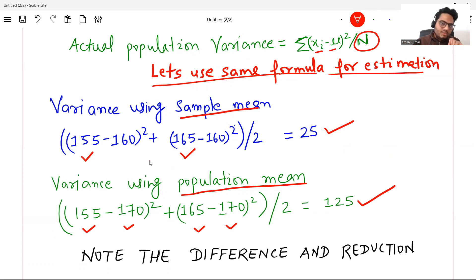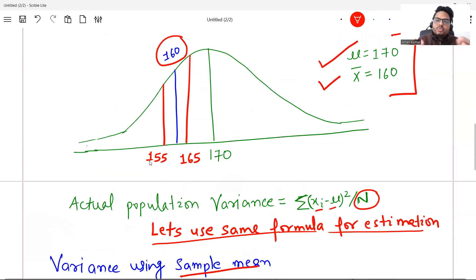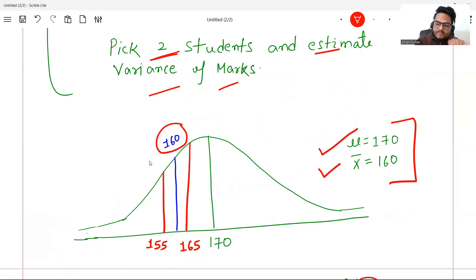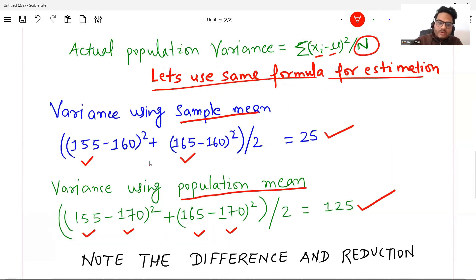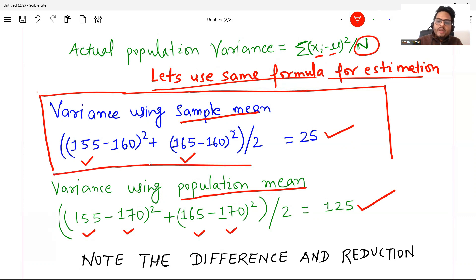Now one important thing to understand here is when you take two students sample from a class, which mean out of these two means you will have? You will have this mean because this is the sample mean. When you are taking two students randomly, which mean you will have? You will have this mean, sample mean. When you are computing using sample mean, then your variance is coming 25, which is very low as compared to when you are comparing from population mean. So it is reduced a little bit.